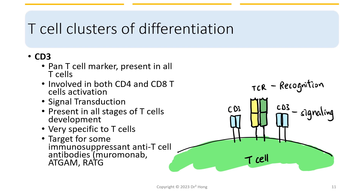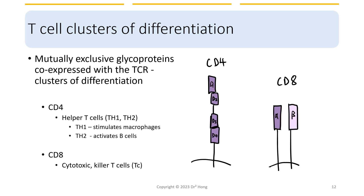Because CD3 is so specific to T cells, it is often the target for some immunosuppressant anti-T cell antibodies. CD4 and CD8 are mutually exclusive glycoproteins that are co-expressed with the T cell receptor — mutually exclusive means when a T cell has CD8, it will not have CD4, and vice versa. In terms of protein structure, CD4 has four extracellular immunoglobulin-like domains, D1 to D4, with a hinge between D2 and D3. CD8 consists of an alpha and a beta chain, both with an immunoglobulin-like domain connected to the membrane-spanning region by an extended stalk.